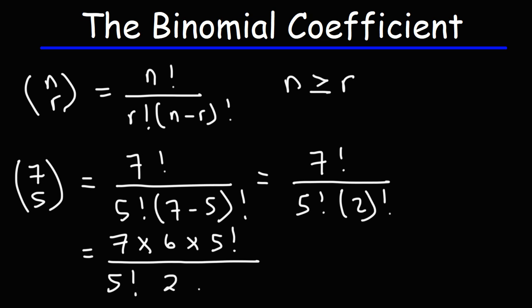2 factorial, we can write that as 2 times 1. Now let's cancel 5 factorial. 7 times 6 is 42. 2 times 1 is 2. And then half of 42 is 21. So that's the value of the binomial coefficient 7 above 5. It's equal to 21.